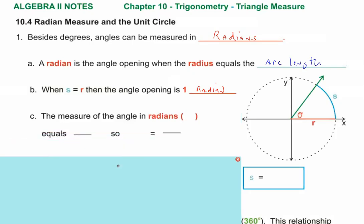Let's try to figure some things out. The measure of the angle in radians — our angle is going to be theta. It could be beta, alpha, X, or T. Theta represents the angle, just like it did when we were talking degrees. Remember, the measure of the angle is going to be the arc length divided by the radius. So in reality, theta equals S over R. Whenever you do this, the angle is in radians.